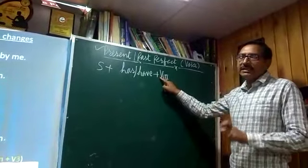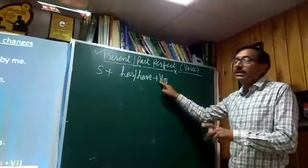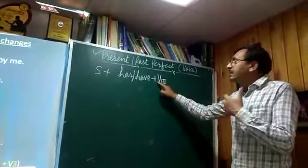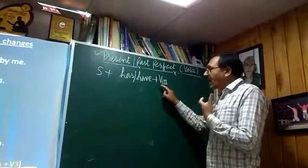For example: write, wrote, written. And sung, written — these are the third forms. This is the past participle form of the verb.